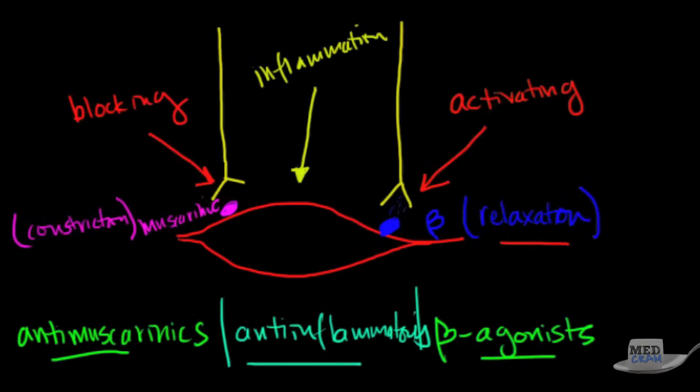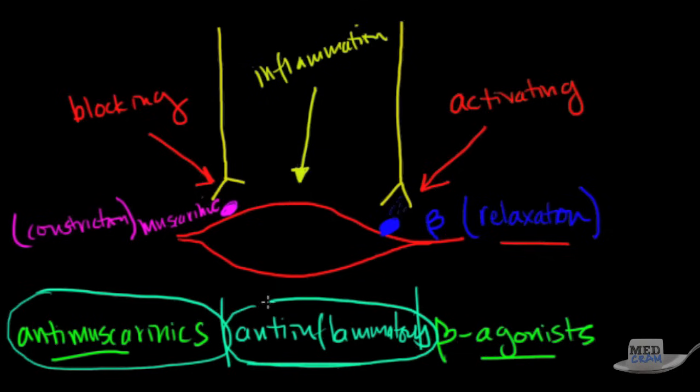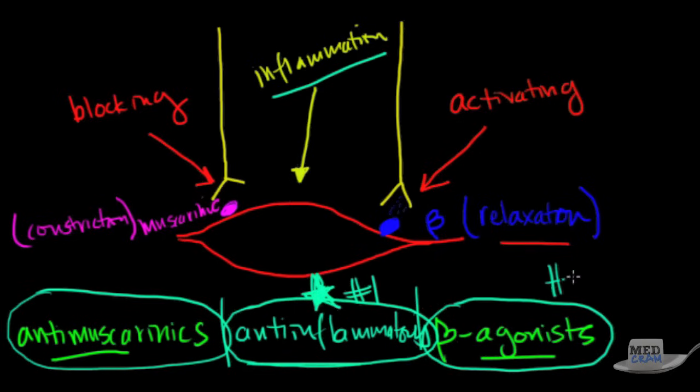So what I've just shown you here are the three cornerstones of asthma treatment. Some of them are going to be used first because they're much more effective than others. And you could probably guess which one is going to be most effective because inflammation is starting everything off. The anti-inflammatories are going to be number one. The beta agonists are going to be number two. And the anti-muscarinics are going to be number three.